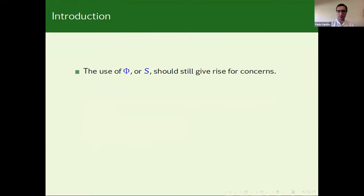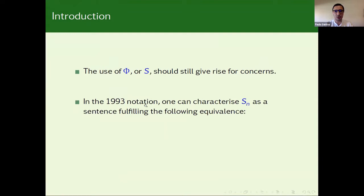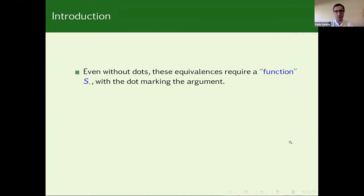And the use of the phi in this more arithmetical framework, or the S in the first formulation that I've showed you, should still give rise to concern in what self-reference is needed. Because in this formulation from 93, we can still characterize this S(n) using this, let us say, schema, where S(n) is equivalent to for all k greater than n, not T sub k. And this summarizes all the previous infinite list of sentences. And throughout my talk, I will mention this formula as being Y.